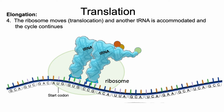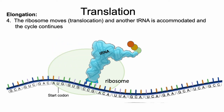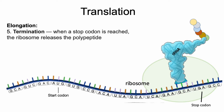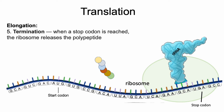Elongation continues by repeating this cycle: the ribosome moves, another tRNA attaches, the growing chain of amino acids transfers to the new amino acid — so now we have three — and the tRNA without the amino acid is released. This happens over and over going down the mRNA strand until it reaches a stop codon; an example is UGA. When it reaches this, the ribosome releases the polypeptide and disassociates from the RNA, producing the specific protein encoded by this particular strand of mRNA, which comes from a very specific stretch of DNA.